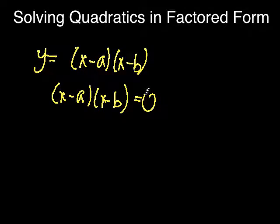For this to be true, at least one of x minus a or x minus b has to equal 0, because 0 times anything is 0.